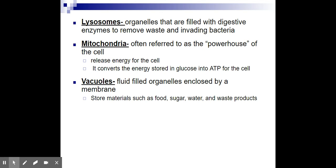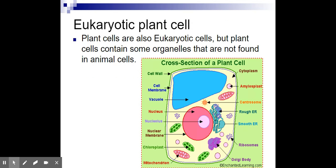Next up, we have the vacuoles. These are going to be like storage closets — the best way to put it. They're going to house things: food, sugar, water, waste products, whatever it is. So if the body doesn't need to use something right at the moment, but might need it a little bit later, dump it in the vacuole. It can retrieve it later if it needs to.